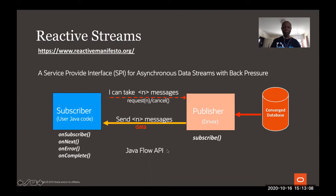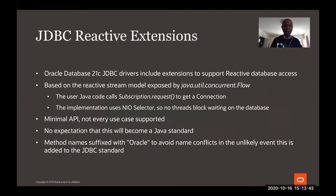The Java Flow API is used to implement reactive streams. There is no implementation of reactive streams in Java SE — in Java SE you have interfaces: the publisher interface, which has one method 'subscribe', and the subscriber interface, which has those methods. You have to implement them yourself, or the driver or framework will implement this under the covers. In real life, nobody codes directly with those APIs or SPIs.